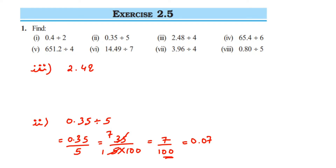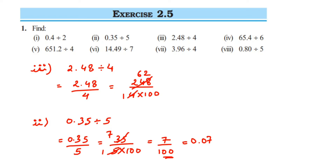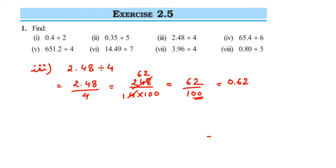Third question: 2.48 divided by 4. Remove the decimal — two digits after it — so it becomes 248 divided by 4 multiplied by 100. Cancel: 4 ones are 4, 4 sixes are 24, 4 twos are 8, giving 62 upon 100. Two zeros in the denominator, so place decimal two digits from the right: 0.62 is the answer.